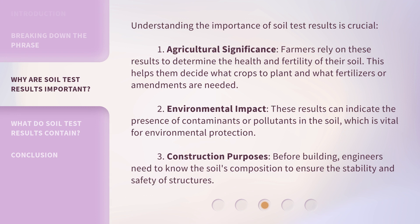Understanding the importance of soil test results is crucial. 1. Agricultural significance — farmers rely on these results to determine the health and fertility of their soil, helping them decide what crops to plant and what fertilizers or amendments are needed. 2. Environmental impact — these results can indicate the presence of contaminants or pollutants in the soil, which is vital for environmental protection. 3. Construction purposes — before building, engineers need to know the soil's composition to ensure the stability and safety of structures.